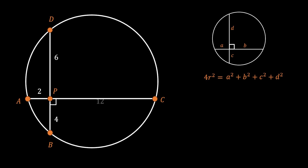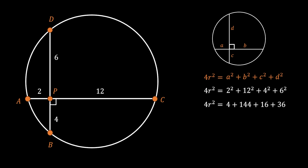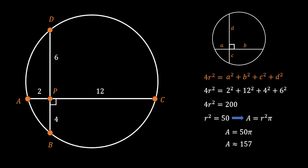We already know that CP equals 12 from the intersecting chords theorem, so we just plug in the values: 4R² equals 2² plus 12² plus 4² plus 6², which gives 4R² equals 4 plus 144 plus 16 plus 36, equaling 200. So R² equals 50, and since the area equals R²π, the area of the circle is 50π, approximately 157 square units.